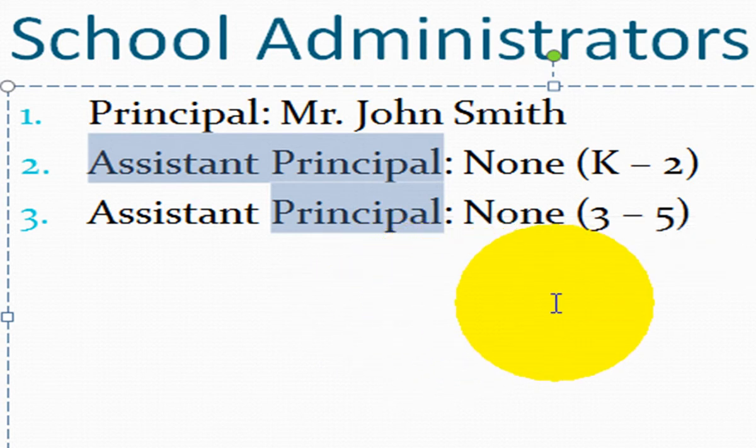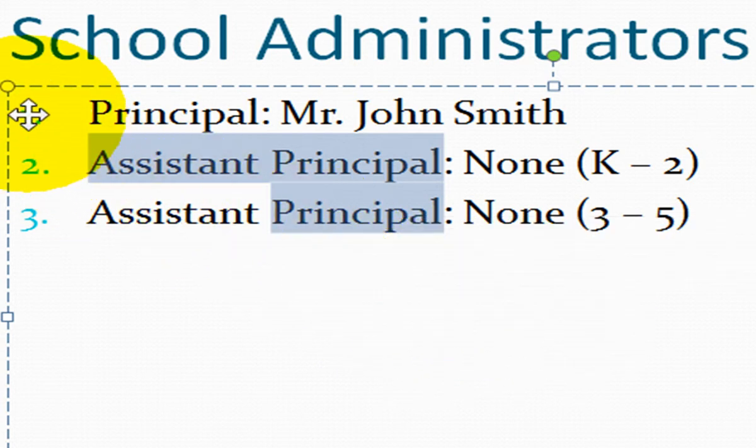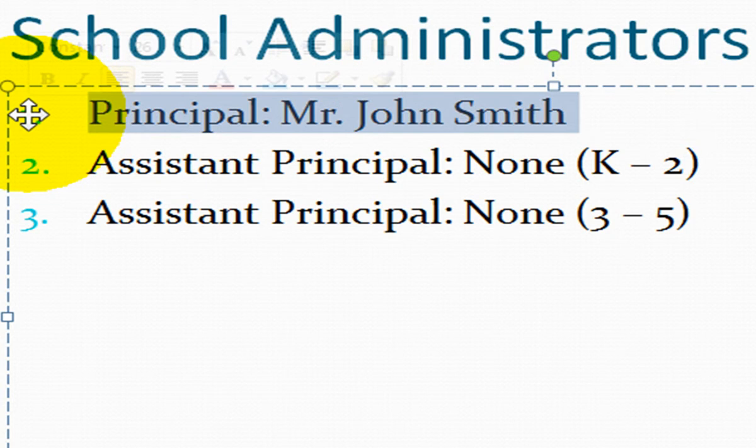If you want to select all of your information near a bullet point, move your mouse over that bullet. Your cursor will turn into a four-headed arrow. Left click with your mouse and this will select your information.